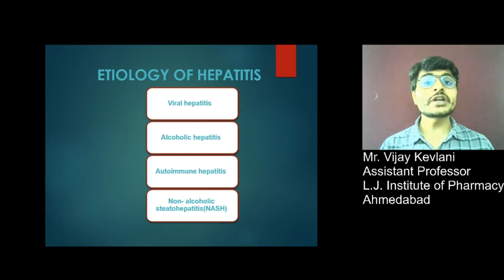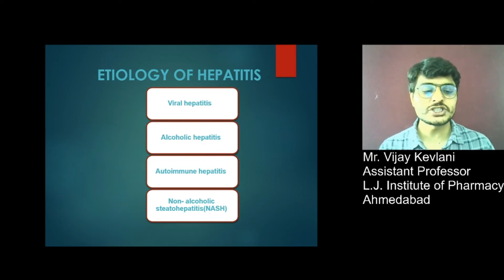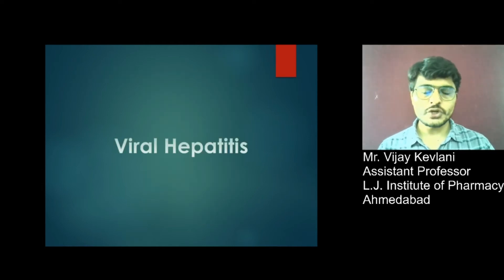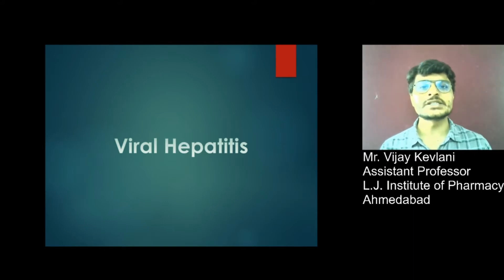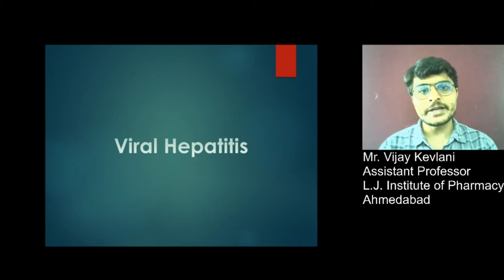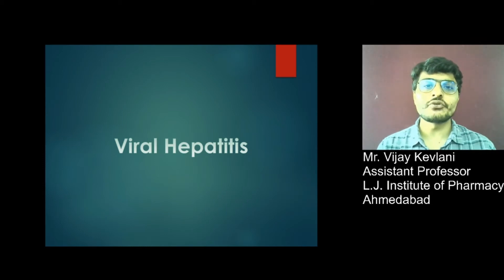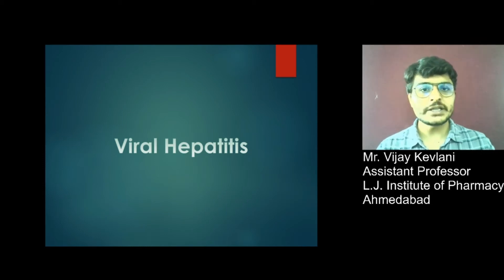Liver inflammation can be due to virus, alcohol, autoimmune disease, or fat accumulation on the surface of the liver. Viral hepatitis is further classified into 5 types: Hepatitis A, B, C, D, and E. These classes are given based on the type of virus present in that condition.